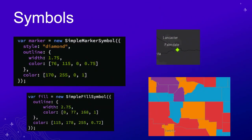Something we do really well in our API is making it intuitive for defining symbols in code. If you want to create a simple icon, you just construct the SimpleMarkerSymbol. You can set it to any of our out-of-the-box primitive shapes - in this case, a diamond. Then you have an outline property where you can control the color and width, and the color of the fill. There's also an example of the SimpleFillSymbol. These properties look very similar across all the symbols by design. You can define colors by arrays of RGBAs, CSS strings, or our out-of-the-box color objects.